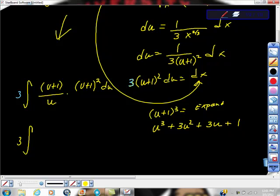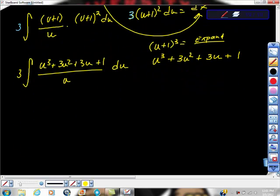So I expanded this. And if you're listening to this and you don't remember your binomial expansion, go back and watch that video because it's really easy. It's very doable. It's not super tricky. u to the third plus three u squared plus three u plus one all over u. What am I forgetting? du.